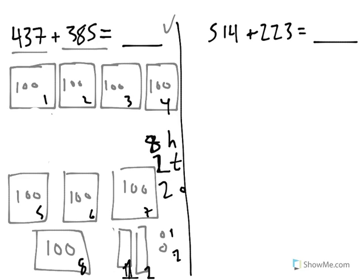So if I were to count all of this now, I could see I have 100, 200, 300, 400, 500, 600, 700, 800, 810, 820, 821, 822 for our correct answer.